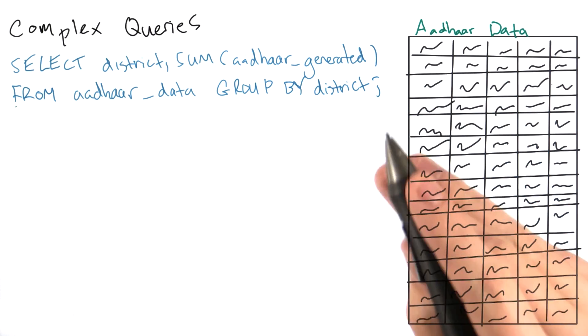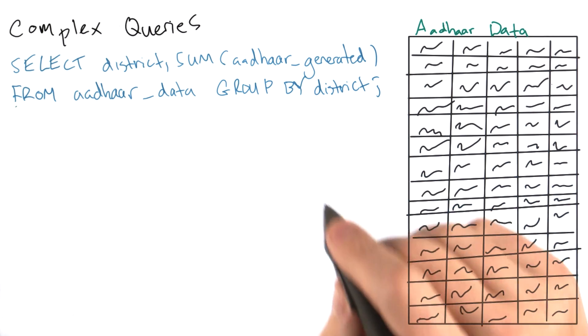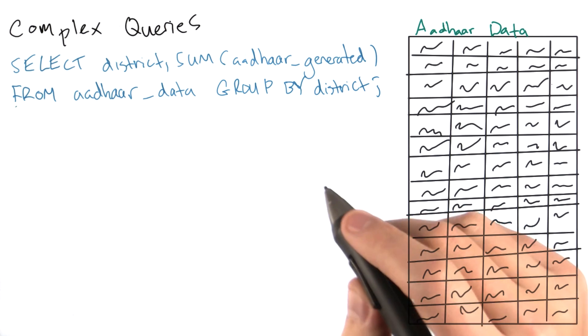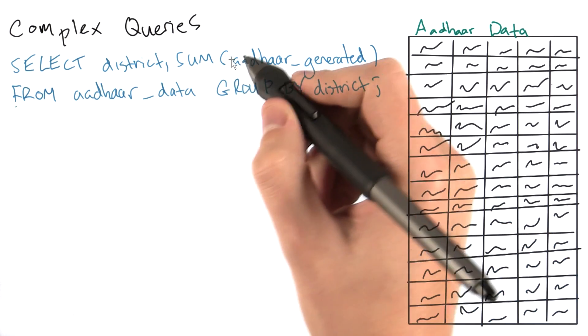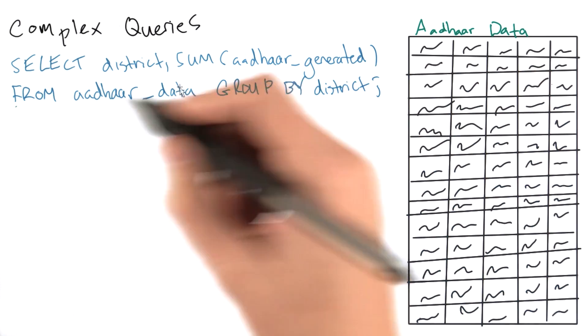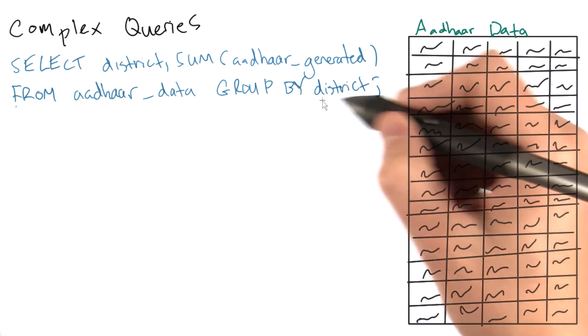For example, what are the total number of enrollments per district? I could write something like this: SELECT district, sum Aadhar generated FROM Aadhar data, GROUP BY district.